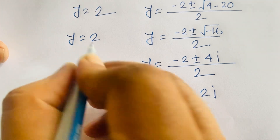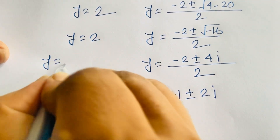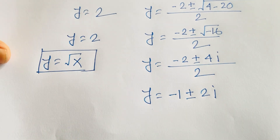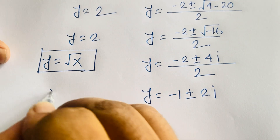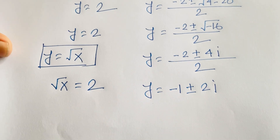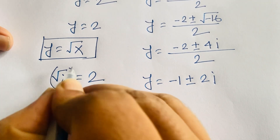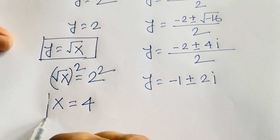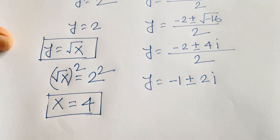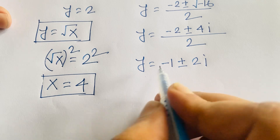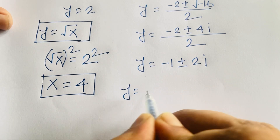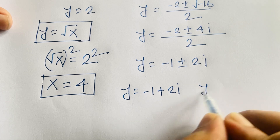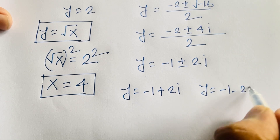Recall that y equals square root of x. For the real solution y equals 2, squaring both sides gives x equals 4. This is our real answer. For the complex cases, y equals minus 1 plus 2i and y equals minus 1 minus 2i.